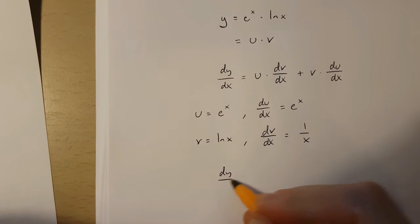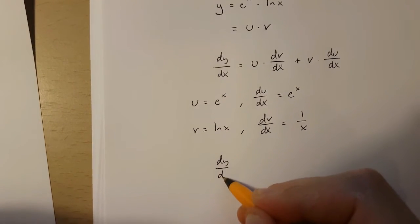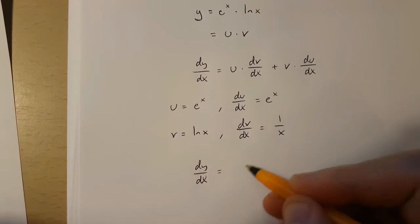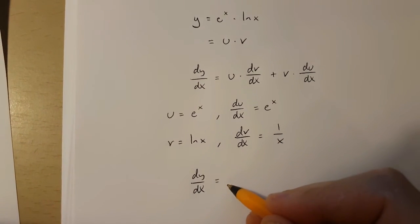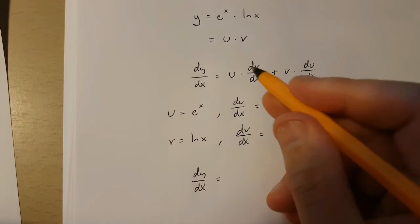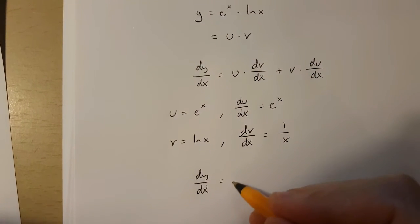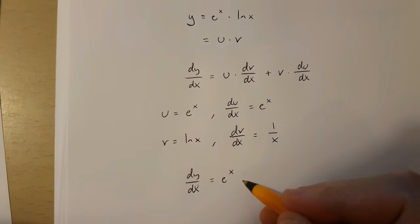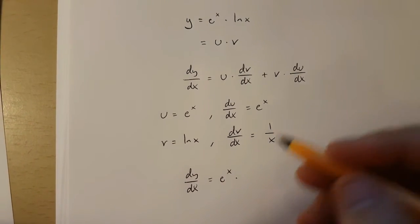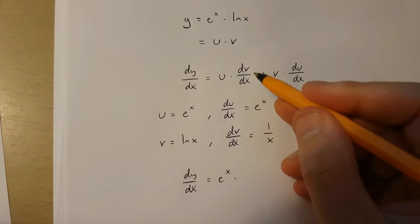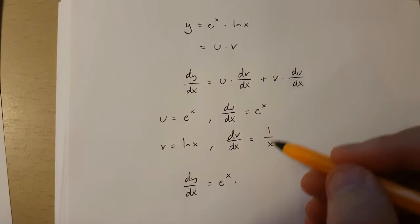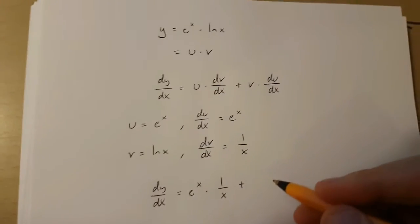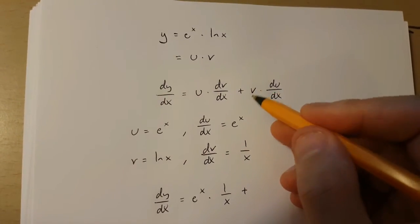This means that dy/dx is going to be equal to u, which is e to the power of x, times dv/dx, which is 1 over x, plus v,